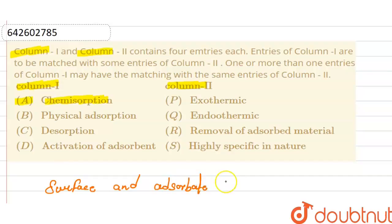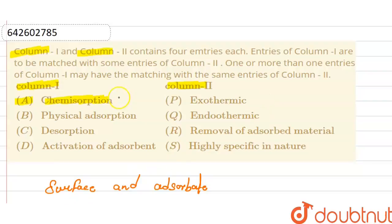Chemisorption is an exothermic process, which means energy is released. The reason behind this is that when adsorbate molecules are adsorbed on the surface, the freedom of movement of molecules becomes restricted, resulting in a decrease in entropy. So P1 is correct for A — chemisorption is exothermic.